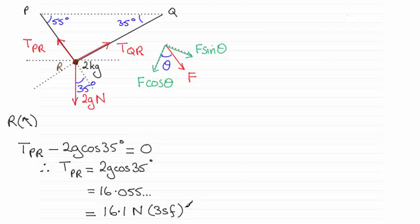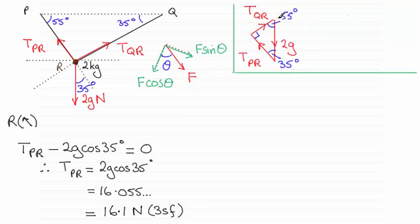That's one way of doing it. Another way is to use the triangle of forces, which is very easy when we've got a right angle. I've drawn the triangle here: the weight 2g is followed by the tension PR, and since the two tensions are at right angles, tension QR joins onto the end of the arrow for tension PR and takes us back to the start — a closed triangle because the particle is in equilibrium. Putting in the angles, this one is 35 degrees and this one is 55 degrees.